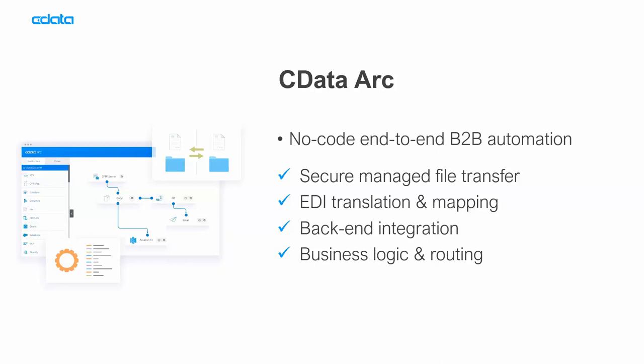The four steps you need to achieve fully end-to-end B2B automation are listed here — this is what CData Arc provides. That's secure managed file transfer, which is the focus for today. Arc also performs EDI translation and mapping, provides robust tools for back-end integration like databases, SaaS applications, and data warehouses, and business logic and routing can help glue all those pieces together for real-world business use cases.